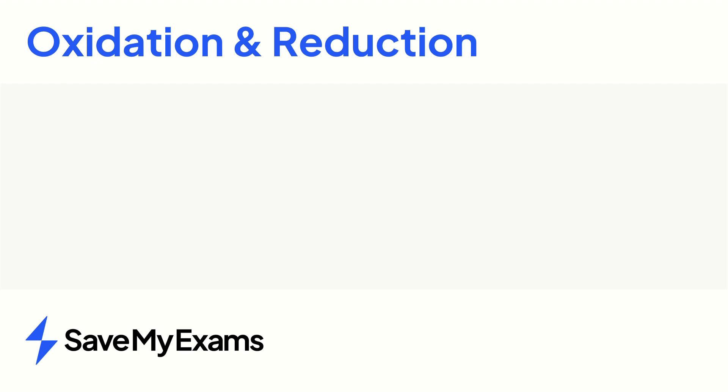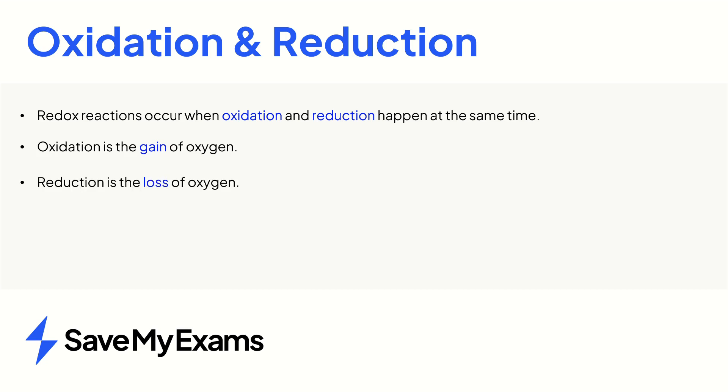In summary, you need to know that a redox reaction occurs when oxidation and reduction happens at the same time. Oxidation is the gain of oxygen, and reduction is the loss of oxygen. Roman numerals can be used to determine the oxidation number of a metal in an ionic compound.